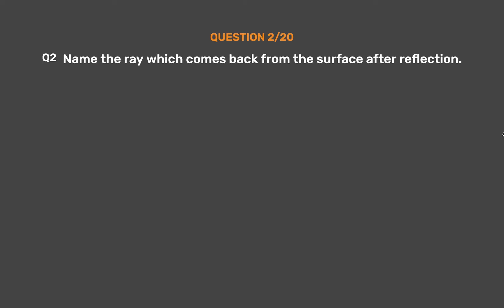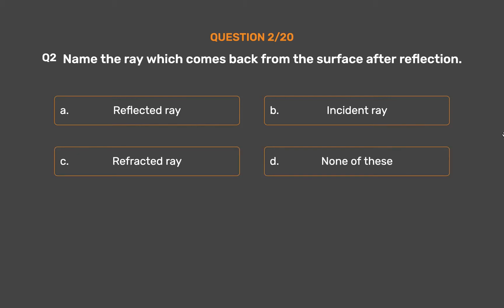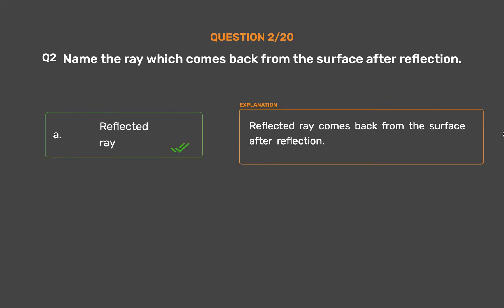Question number 2: Name the ray which comes back from the surface after reflection. Option A: Reflected ray. Option B: Incident ray. Option C: Refracted ray. Option D: None of these. The correct answer is Option A, Reflected ray. The reflected ray comes back from the surface after reflection.